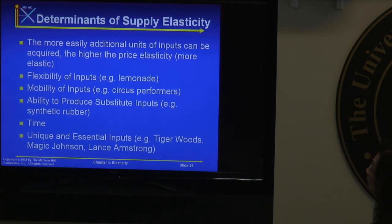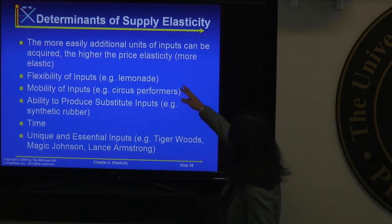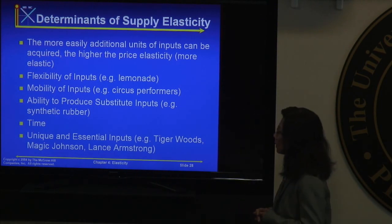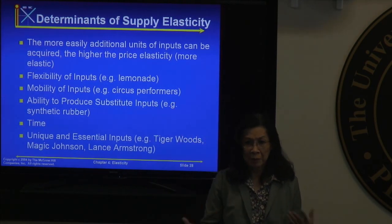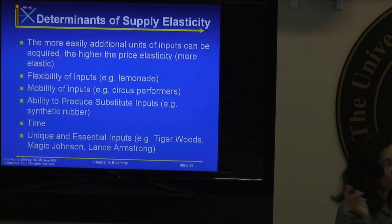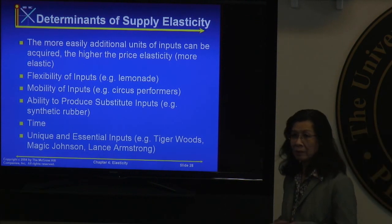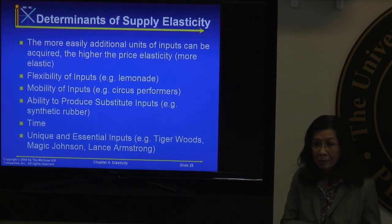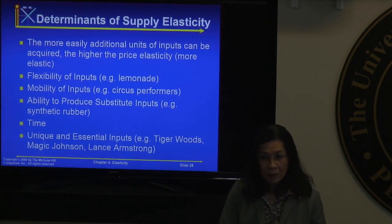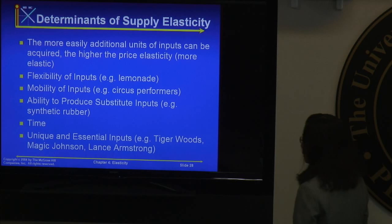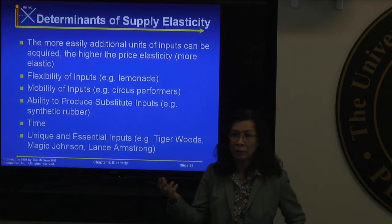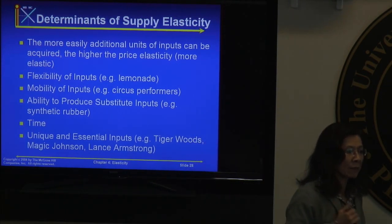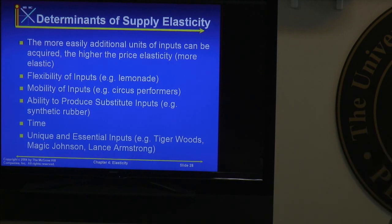One determinant is how easily additional inputs can be acquired — as with lemonade, the inputs are flexible. Another is mobility of inputs. The textbook gives the example of circus performances: they set up a tent for a week or month, fold it up, and move to the next county. The inputs are very mobile.